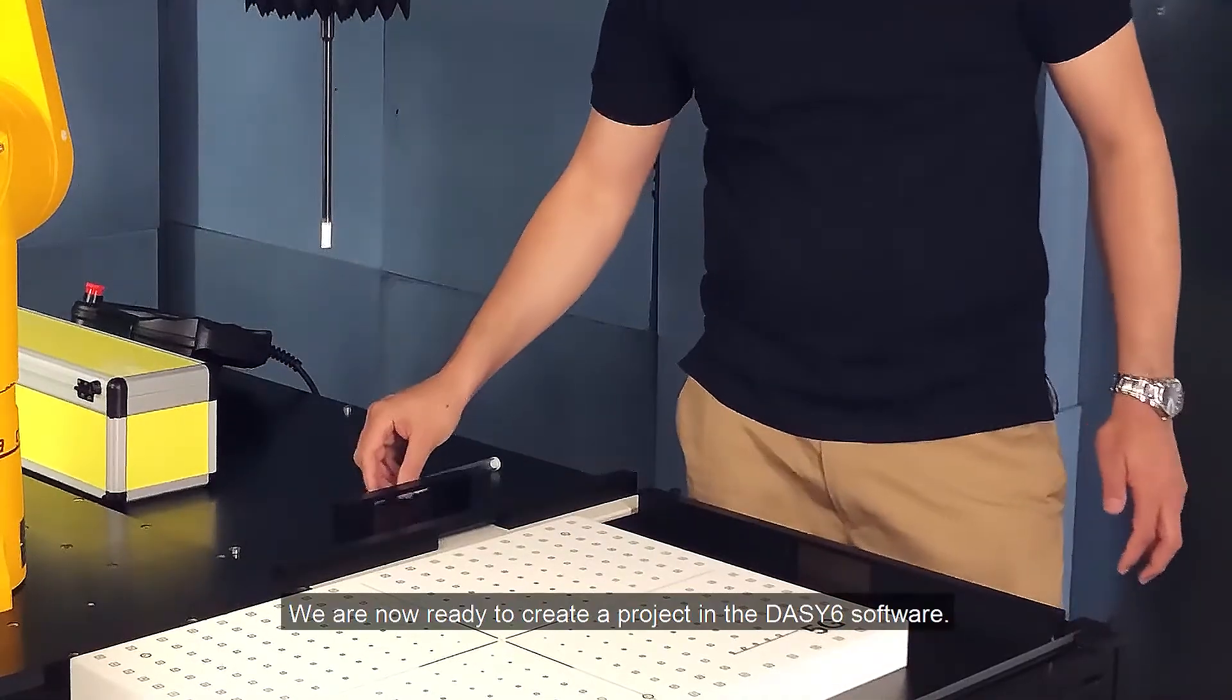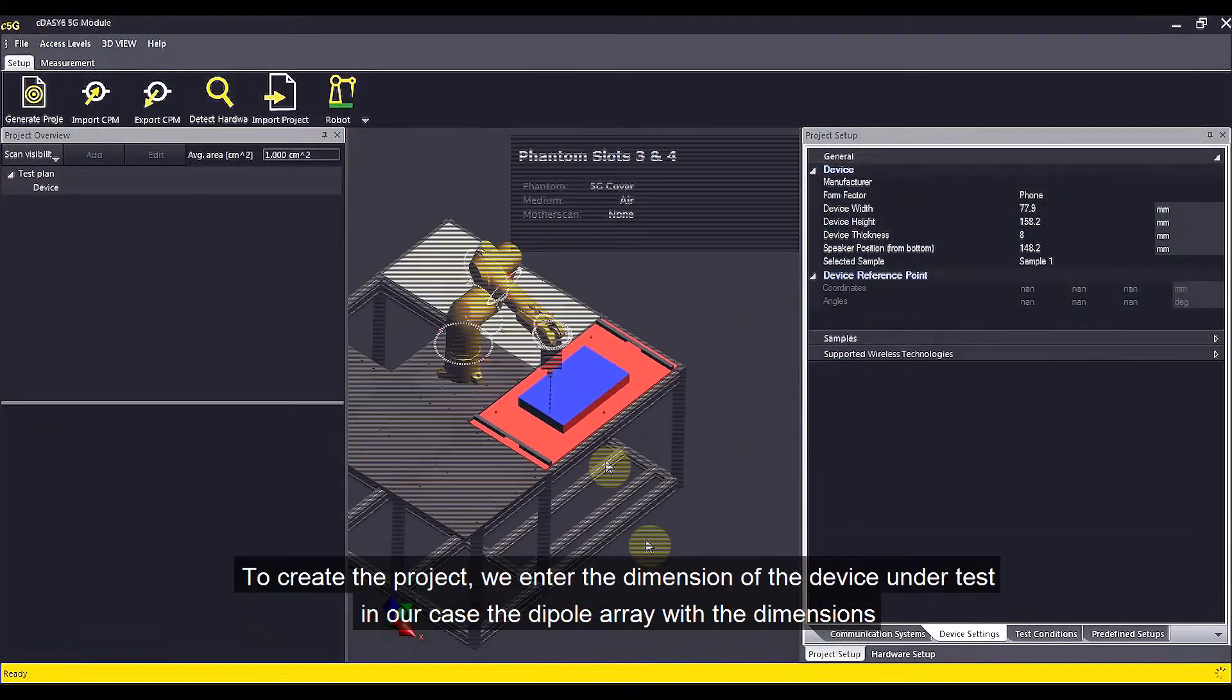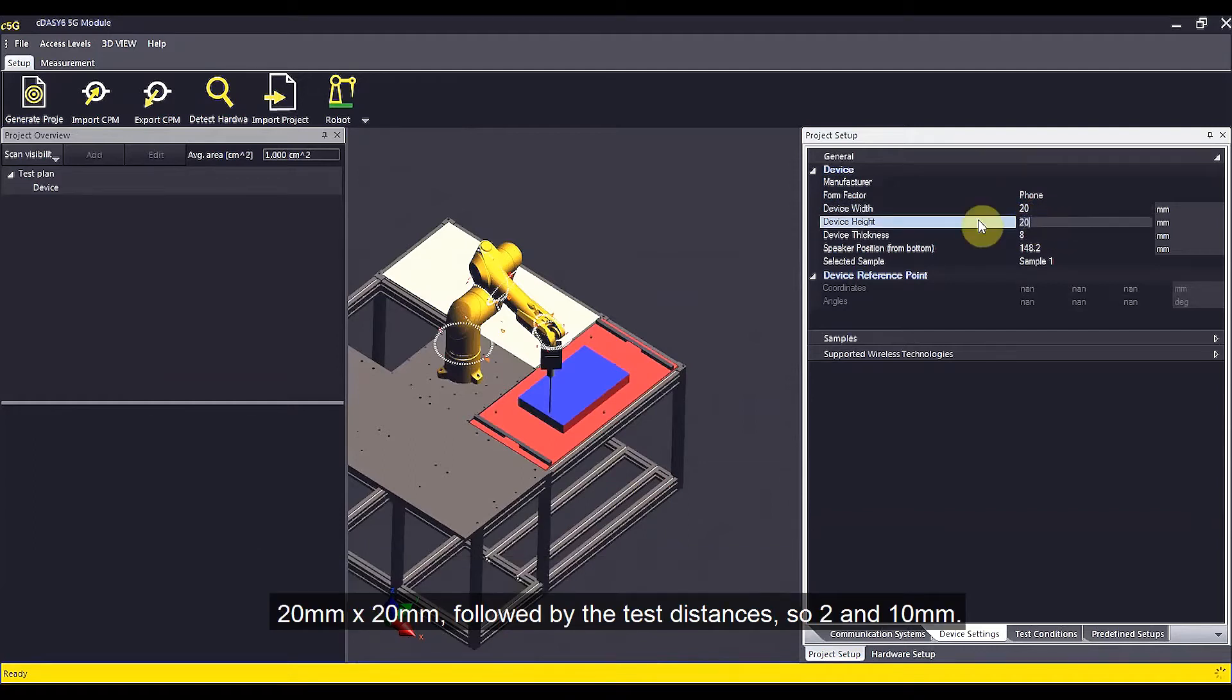We are now ready to create a project in the DAISY6 software. To create the project, we enter the dimensions of the device under test. In our case, the dipole array, with the dimensions 20 millimeter by 20 millimeter.